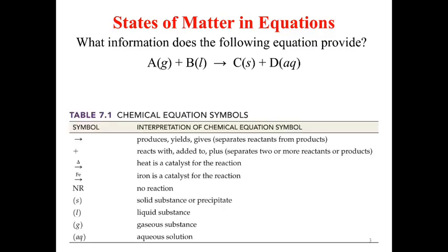You also get arrows, plus signs, reactants, and products. The big notation she noted was catalysts and heat. Heat is written as a delta symbol — meaning change in temperature — and because it's written over the arrow, that's something we are putting into the reaction. We're heating up the reaction. Another notation is a symbol like Fe over the arrow, meaning iron is added to the reaction. It's important to cause the reaction to occur, but it's not a reactant or a product — it's there to facilitate the process. That's a catalyst.